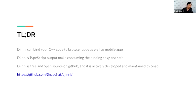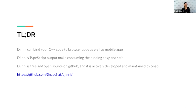That's the end of my talk. The TL;DR: Genie can bind your C++ code to browser apps as well as your mobile apps. We have TypeScript output, which makes consuming them really easy. It is free and open source on GitHub, and it's been actively developed and maintained by Snap. Thank you very much — I think I have some time to answer questions.